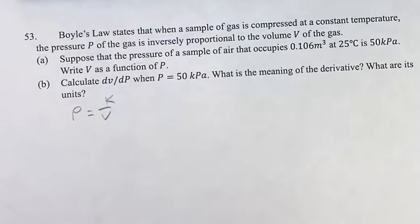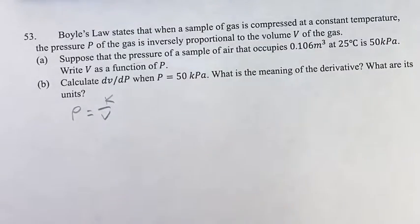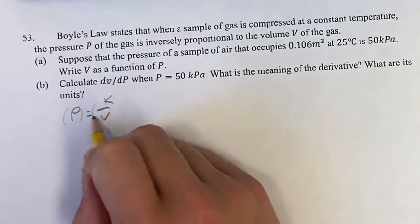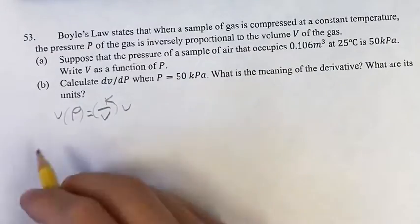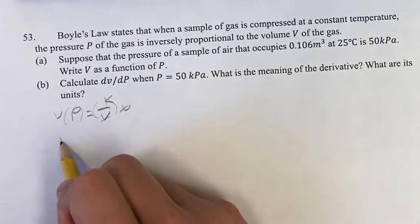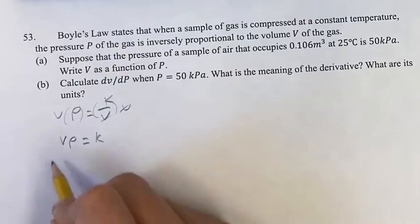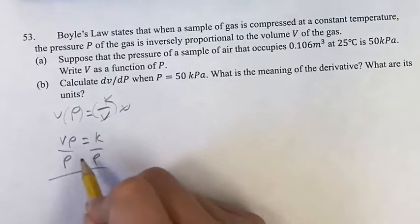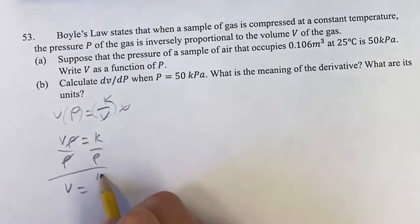We want to write V as a function of P, so this is just getting V alone. You can multiply both sides by V, which will simplify this fraction, leaving us with VP equals K. To get P off that side, we get V equals K over P.